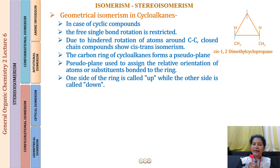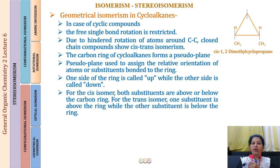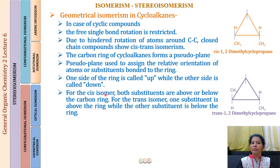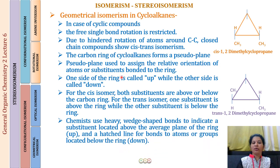For the cis isomer, both substituents are above or below the carbon ring — in our example, the hydrogens are above and the methyl groups are below. For the trans isomer, one substituent is above the ring and the other is below. Chemists use a heavy wedge-shaped bond for groups above the ring plane and a hatched (dashed) line for groups below the ring plane.